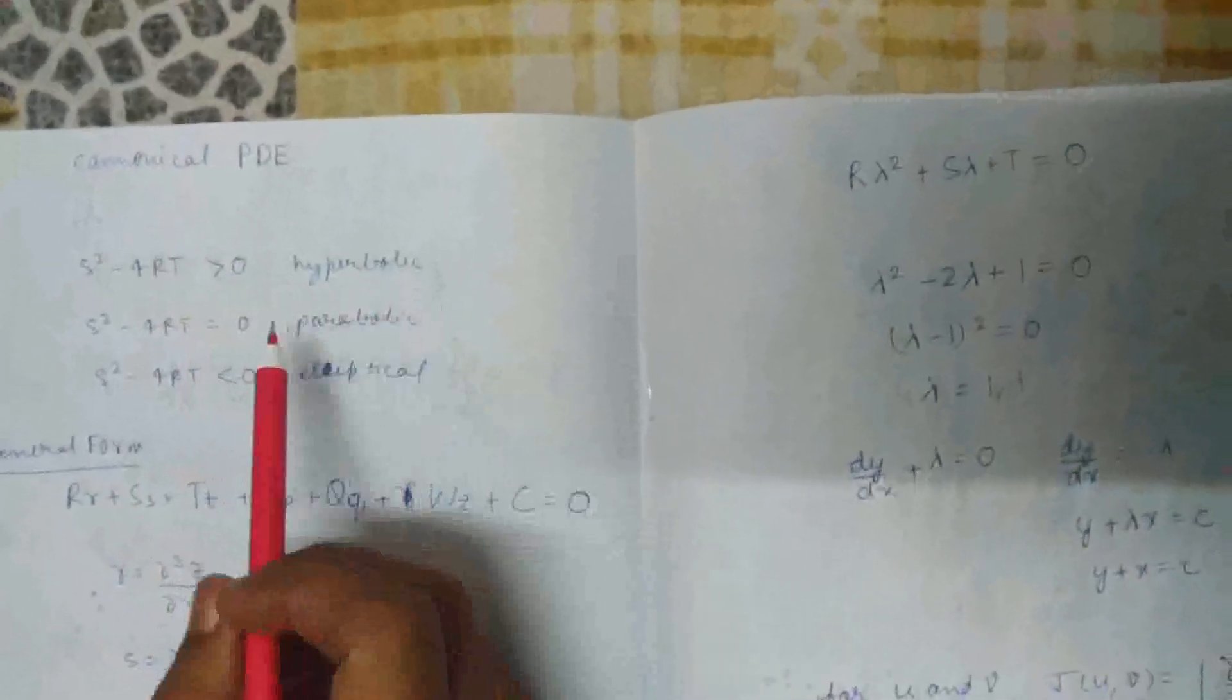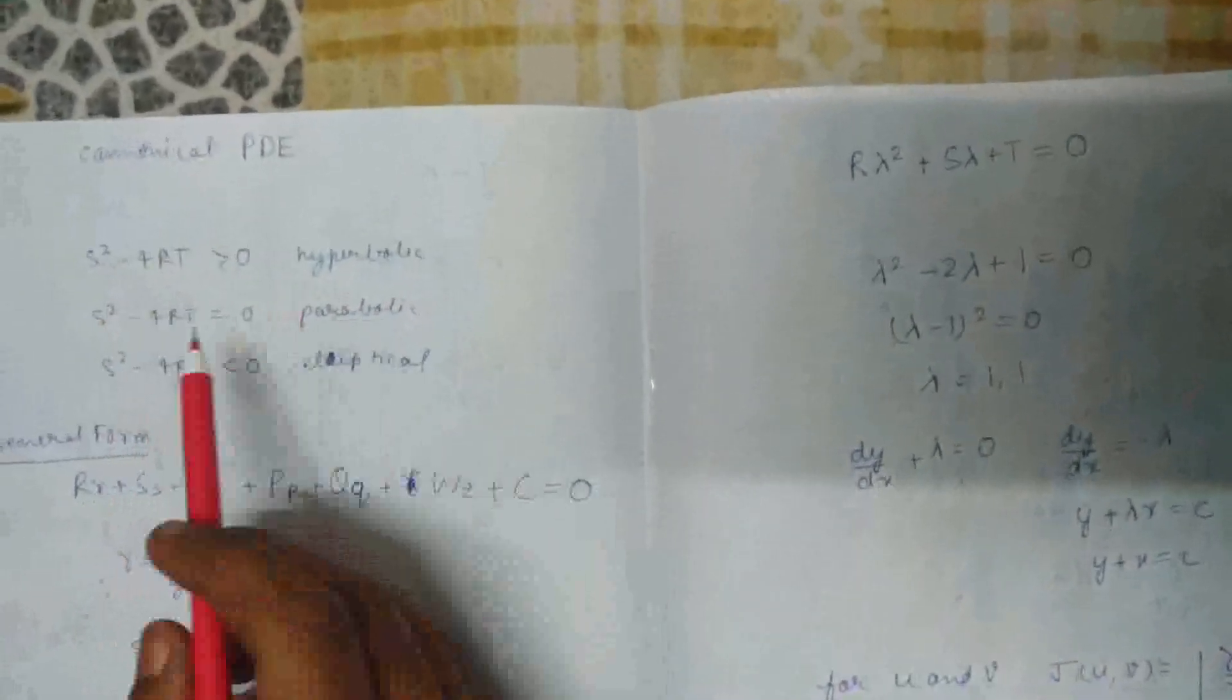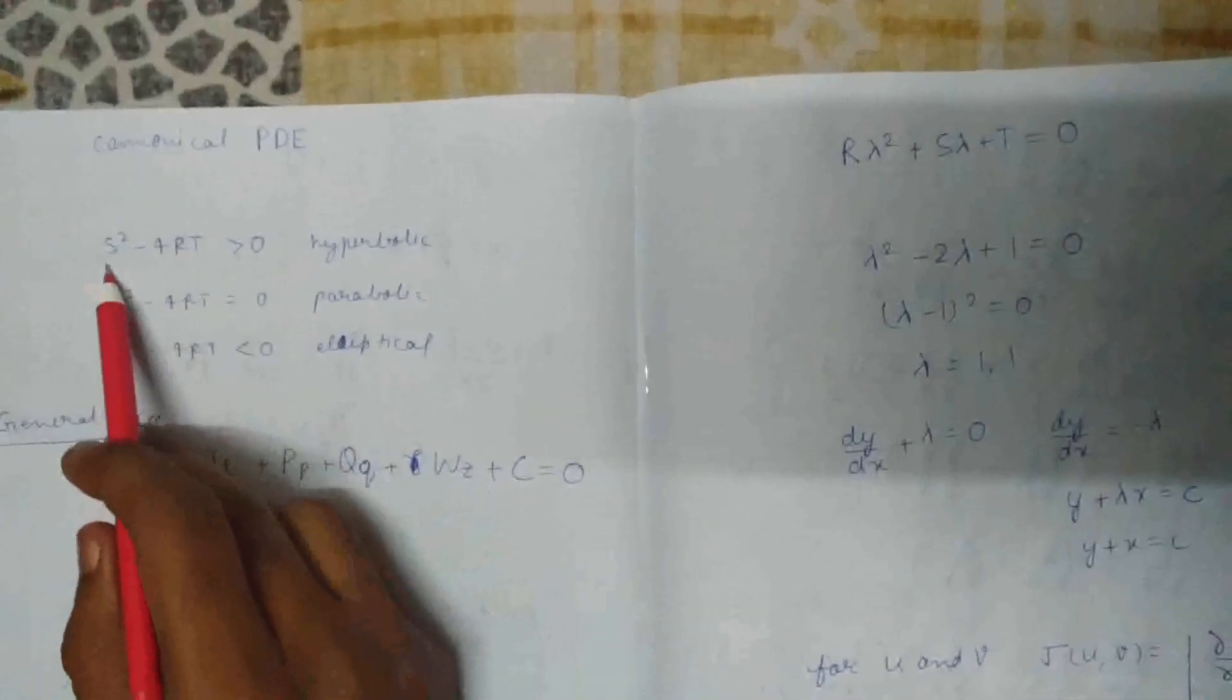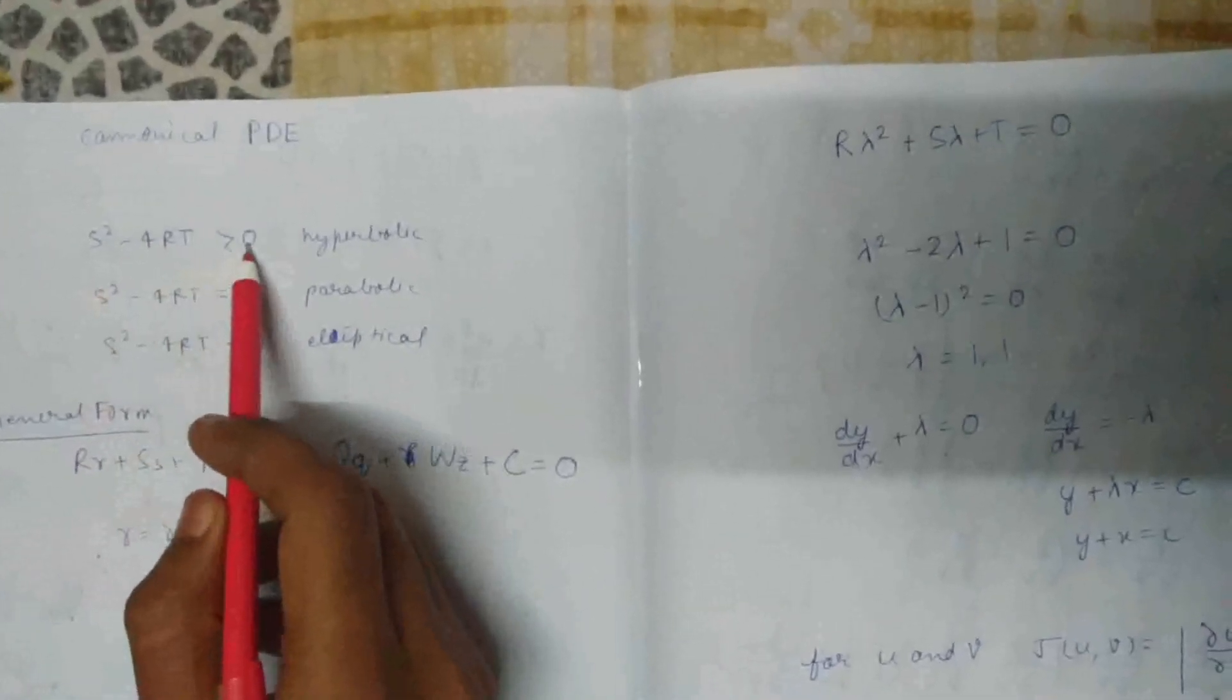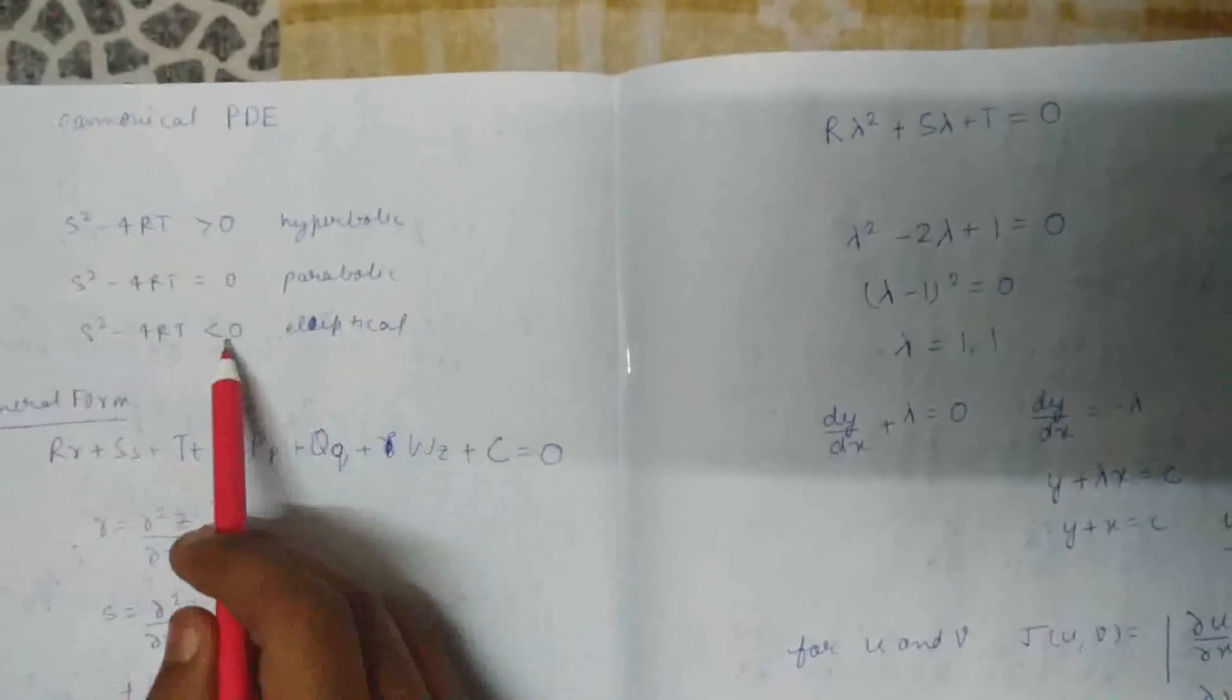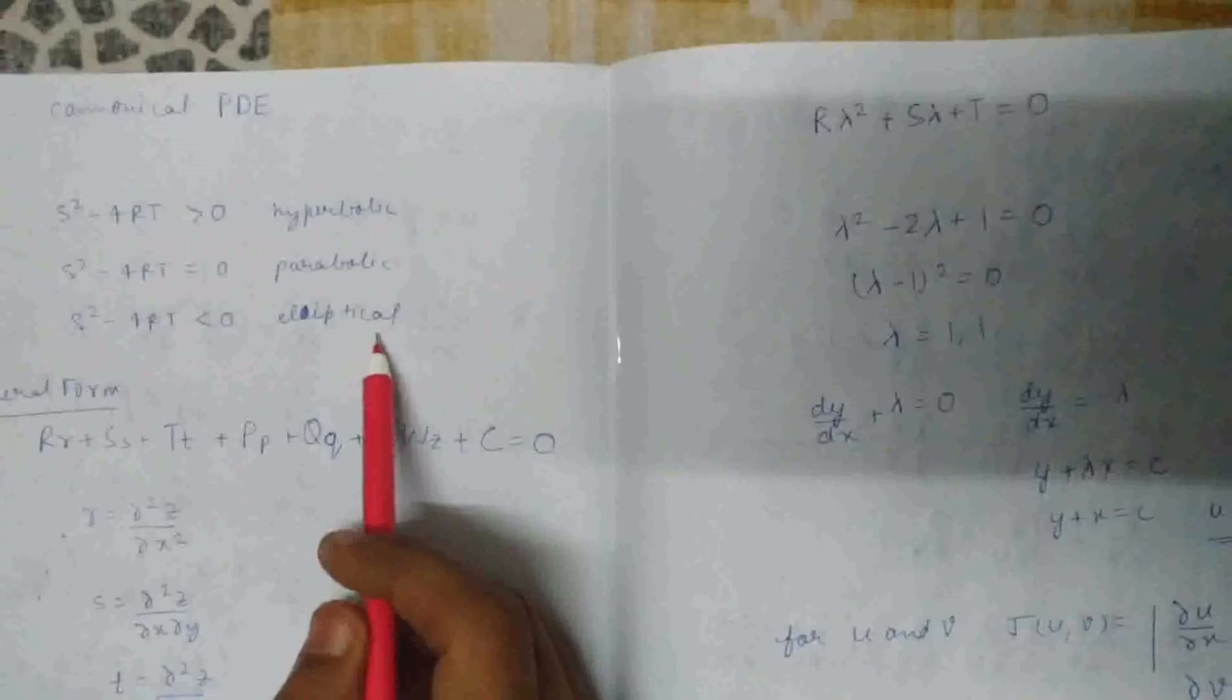The canonical PDE can be of three forms. We calculate from the coefficients of this equation the value S² minus 4RT. If it's greater than zero, it's hyperbolic. If it equals zero, it's parabolic. If it's less than zero, it's elliptical.